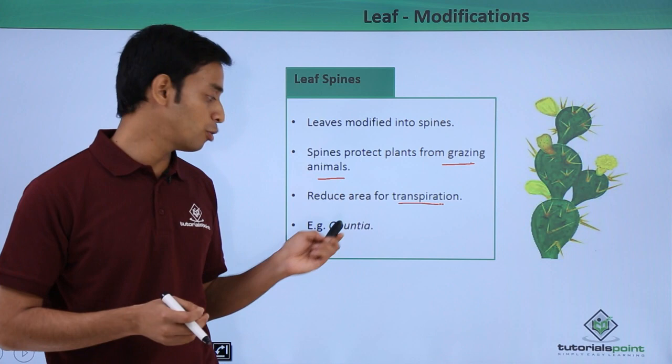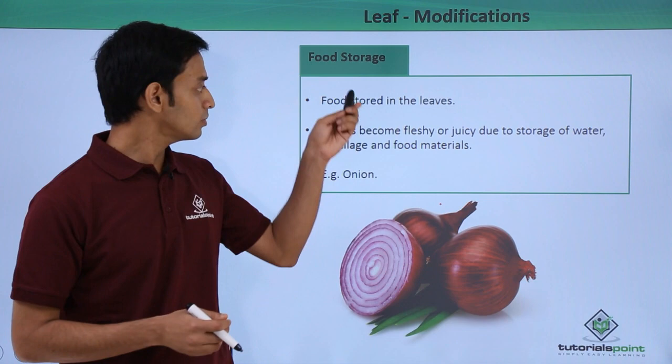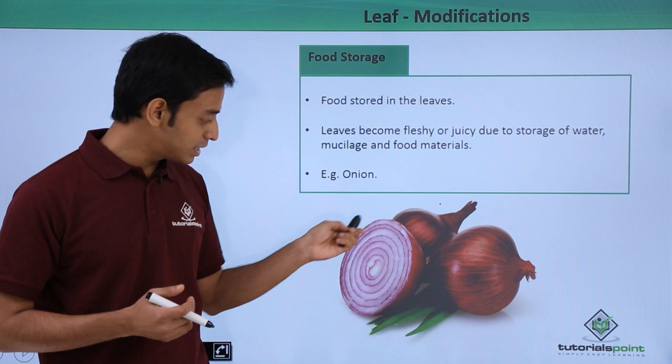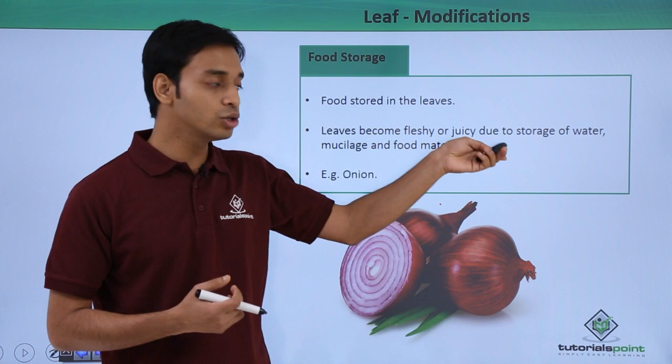The next type of modification a leaf can undergo is storage of food. A very common example is onion. Here, food is stored in the leaves — these are the scaled leaves where food is stored. The leaves become fleshy and juicy due to the storage of water, storage of mucilage, and also food materials.